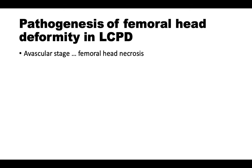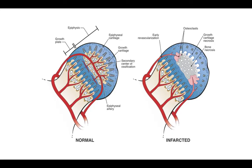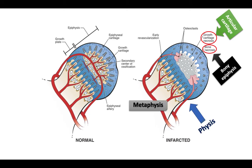Regarding pathology, we must describe both the femoral side and the acetabular side. On the femoral side, there will be osteonecrosis — avascular necrosis — an avascular stage where the femoral head is deprived of blood supply and femoral head necrosis occurs. Afterwards, there will be a revascularization stage with resorption, fragmentation, femoral head collapse, and femoral head deformity. To understand the pathogenesis of femoral head deformity, we must know the anatomy of the capital femoral epiphysis: the articular cartilage, growing cartilage, bony epiphysis, and metaphysis.